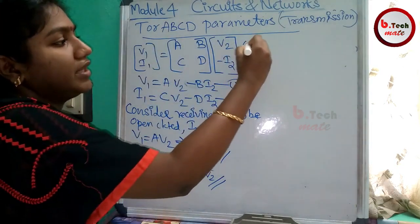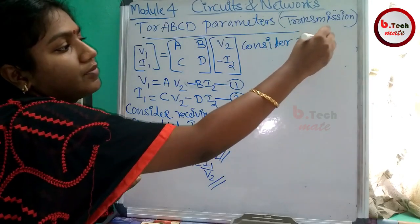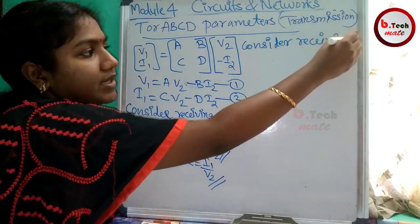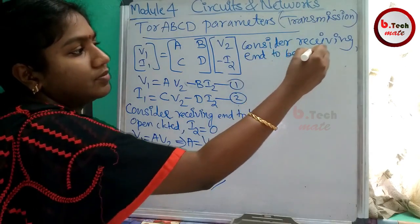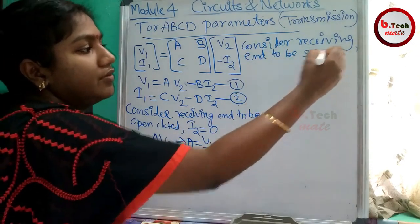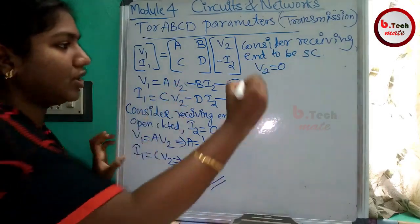Next condition. This is the same receiving end to be short. Now consider receiving end to be short circuit. That is, V2 is 0.